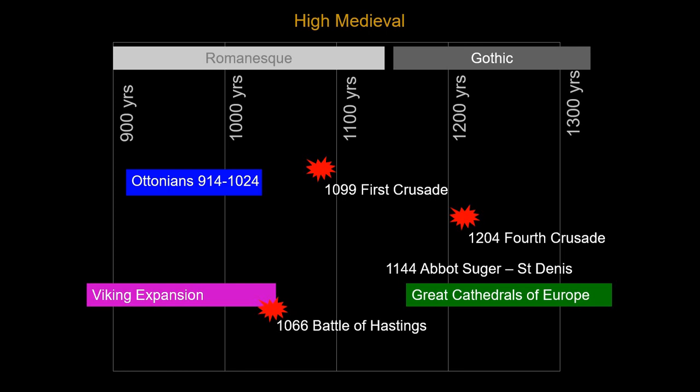Romanesque is the first true international style, growing up simultaneously in Spain, Germany, France, and Italy. But it's replaced by the Gothic, which has a specific birthplace in France — the Île-de-France, the regions around Paris. By the middle of the 12th century we're moving into Gothic, though there's a lot of overlap. By the 13th century the Mongolian conquests come into Eastern Europe and even conquer Baghdad — another hard historical break. Things could be worse; we're not struggling through the Crusades or Norman and Mongolian conquests.